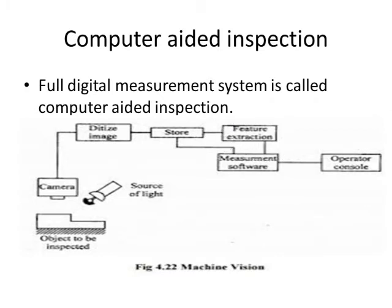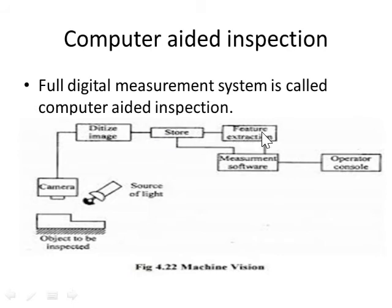Feature extraction identifies what needs to be measured — based on image intensity and where the cone and crest points are located. All of this is inspected by the feature extraction process. The measurement software acts as a comparing unit; the image gives feedback to the software, which then compares the extracted profile — the cone, crest, and up-and-down variations — with reference data.